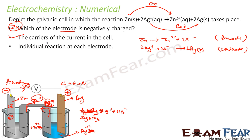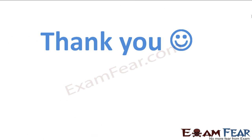The third part asks for individual reactions at each electrode. At the anode, zinc is oxidized: Zn → Zn2+ + 2e⁻. At the cathode, Ag+ is reduced to silver: Ag+ + e⁻ → Ag.